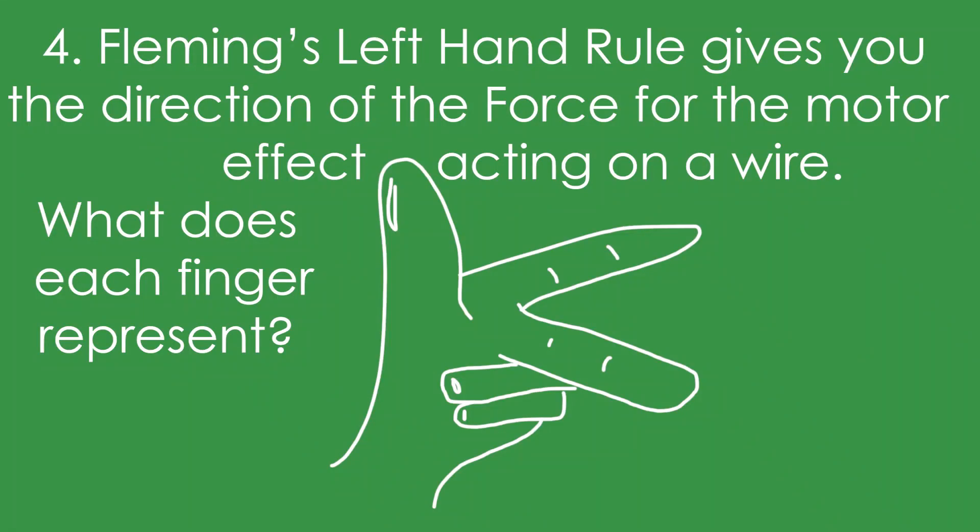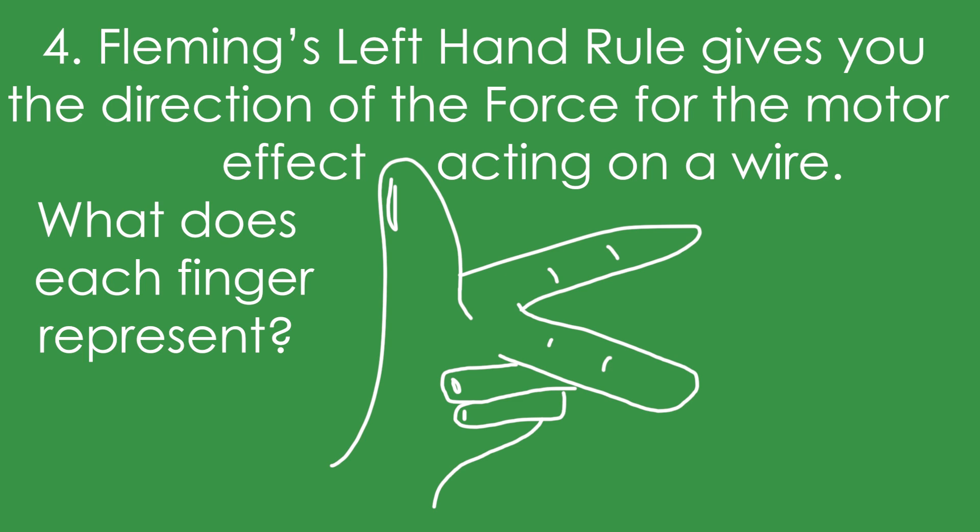Question 4: Fleming's left hand rule gives you the direction of the force for the motor effect acting on a wire. What does each finger represent? Remember FBI: the thumb is force, the first finger is field, and the second finger is current.